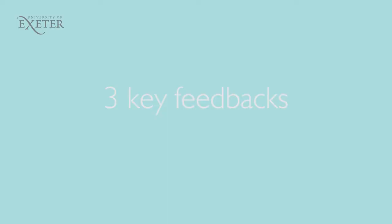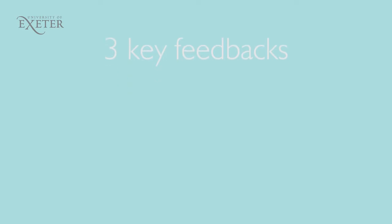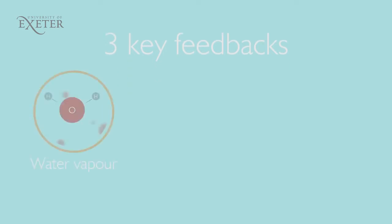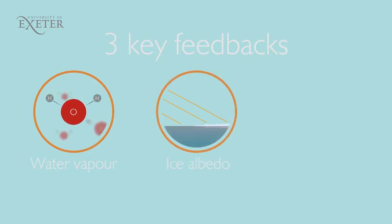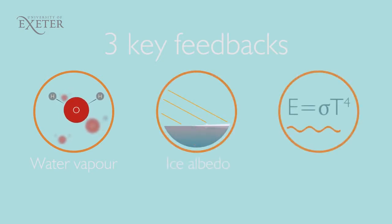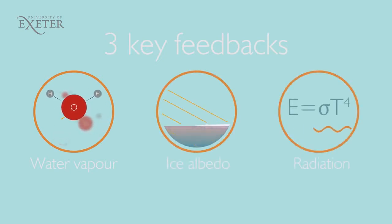There are three key feedbacks that play a huge role in determining the state of the climate system: water vapour feedback, ice albedo feedback, and what we'll call the radiation feedback.